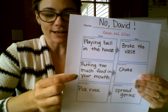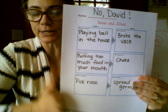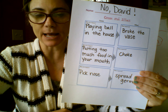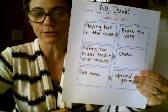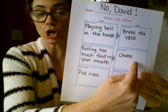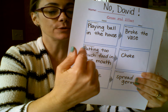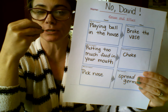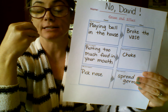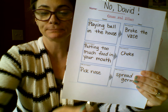The next cause: if you remember, he was putting too much food in his mouth. Why would his mom not want him to do that? What could happen? Yeah, he could choke. So the cause is putting too much food in your mouth, and the effect would be choking.